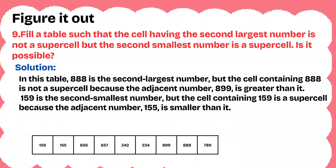Question 9: Fill in the table such that the cell having the second largest number is not a supercell but the second smallest number is a supercell. Is it possible? Here we fill in the table: the second largest number is 8988, and the cell containing 888 is not a supercell because 899 is greater than it. When we look at 159, it is the second smallest number — the first smallest is 155. Since 159 is placed at the corner, it is only compared with the smallest number, so it is a supercell.